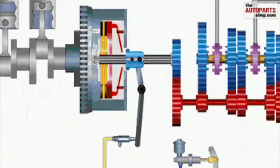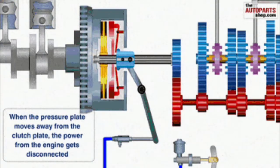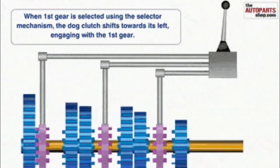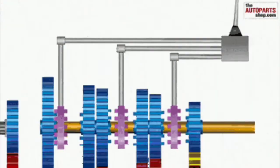A clutch is a machine member used to connect the driving shaft to a driven shaft, so that the driven shaft may be started or stopped at will without stopping the driving shaft. A clutch thus provides an interruptible connection between two rotating shafts.